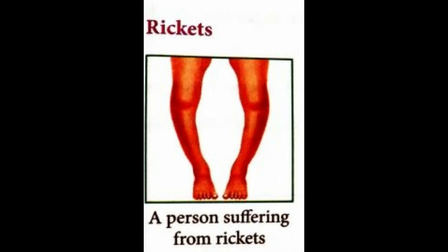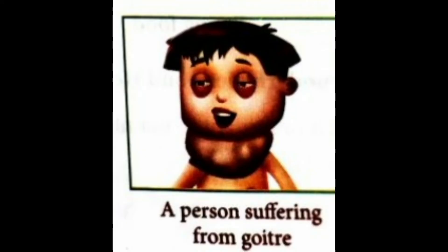Rickets is caused by the deficiency of vitamin D in our body. A person suffering from rickets has bow-shaped legs. To prevent the disease, one should take food rich in milk, cheese and eggs. Goitre is caused by the deficiency of iodine. The person may suffer from swelling in the neck. To prevent this disease, one should take iodized salt and eat a lot of seafood.